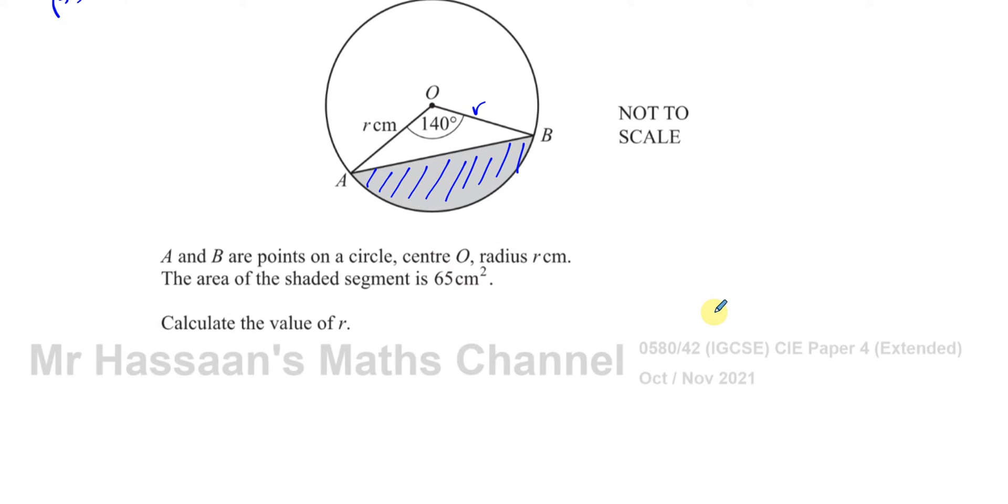The area of the sector is given by the angle theta over 360 times pi r squared. The area of this triangle is going to be given by a half a b sine theta, or sine c. It's like the two sides that make the triangle, which are both r, times the sine of the angle between them. With these two formulas, we can work out how to find r because we know that if you subtract the area of the sector and the area of the triangle, we're left with the area of the segment, and the only thing that we won't know is r.